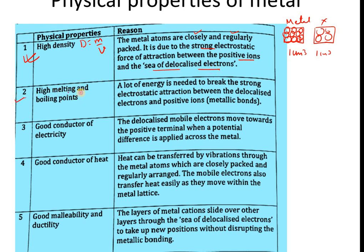Metals have high melting and boiling points. Whenever you encounter strong electrostatic forces of attraction, remember that a very large amount of energy is needed to break them. Because metallic bonding involves this strong electrostatic force of attraction between the metal cations and the delocalized electrons, a great deal of energy is required to separate the atoms, which is why metals have very high melting and boiling points.